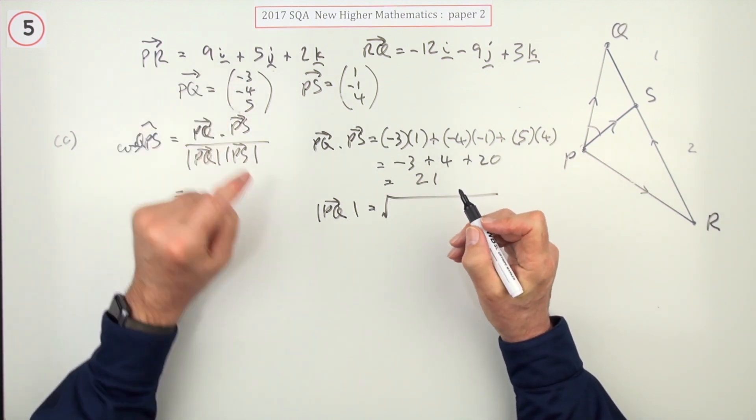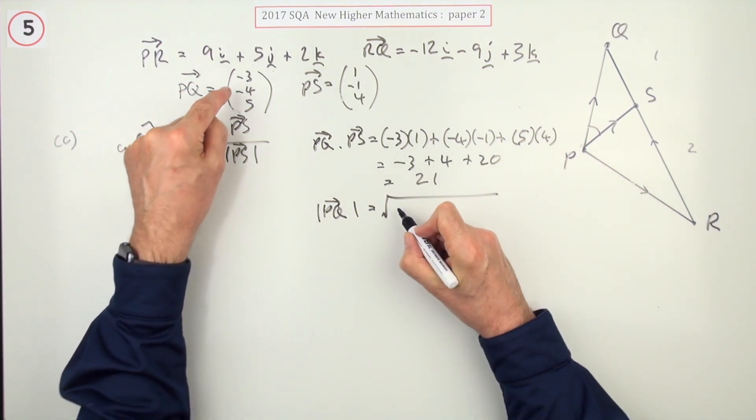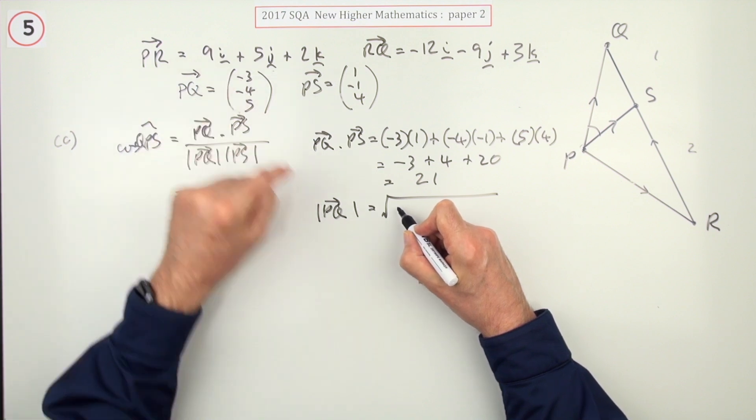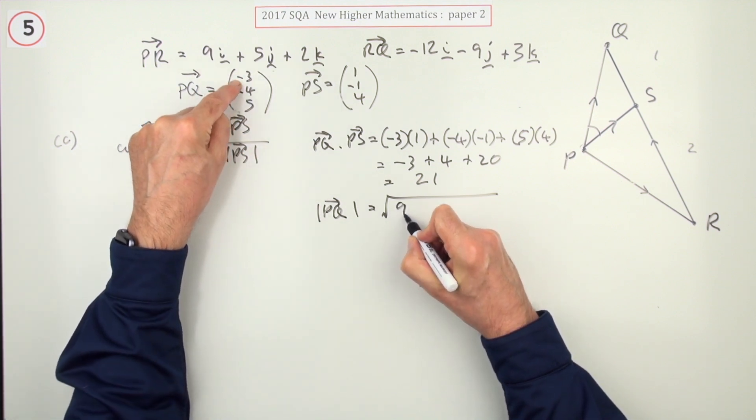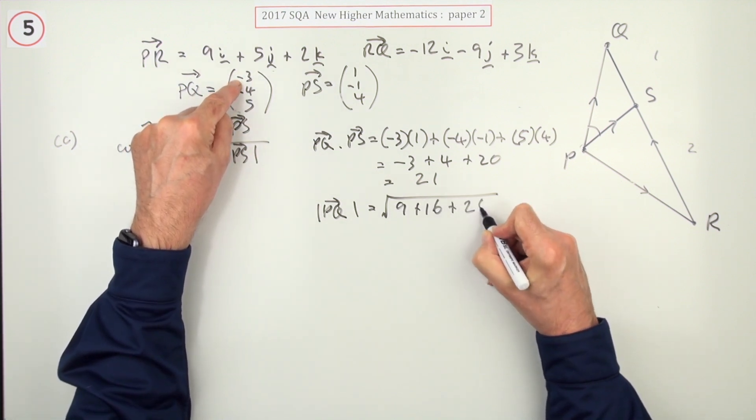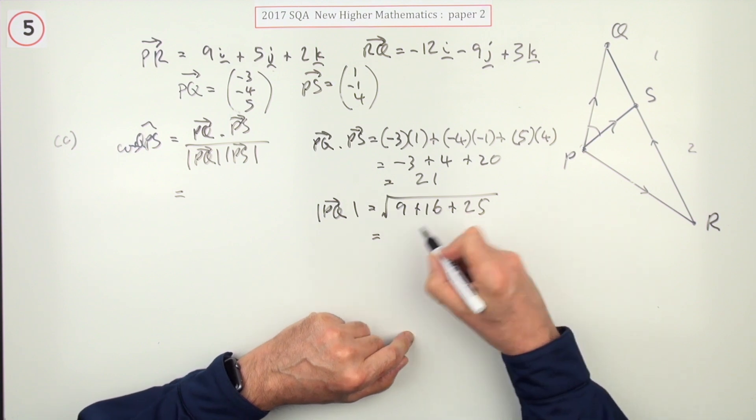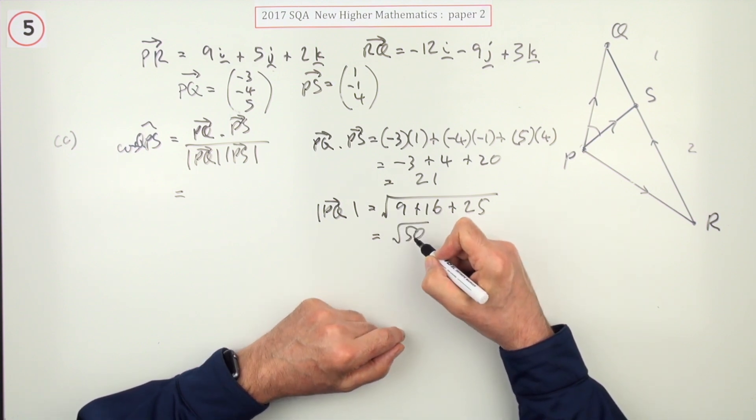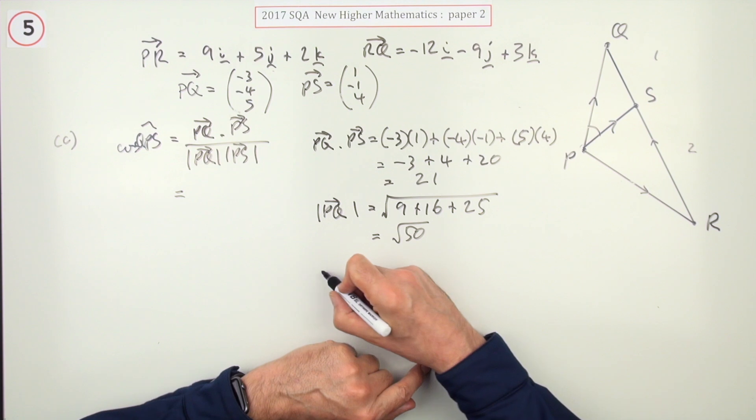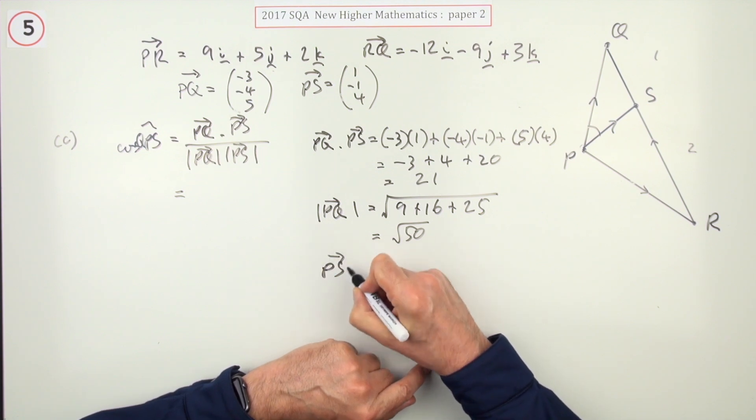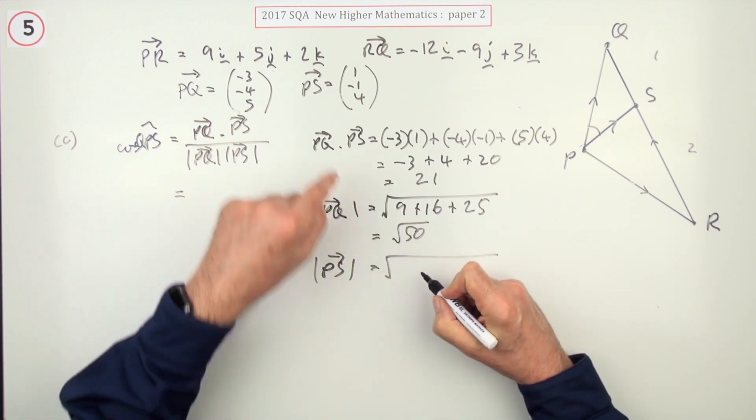Now magnitudes. Magnitude of PQ, I'm just going to jump straight in. Let's square these. That's 9 plus 16 plus 25. What's 25 and 25? So that's 50, which is a bit annoying because it simplifies, and you're never sure, should I simplify it?